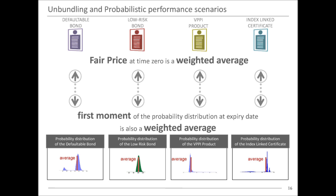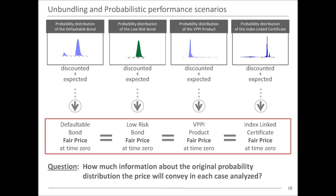You assign a proper probability to any possible trajectory, and using this information and the corresponding sigma-algebra, you compute the fair value. But if the fair value is a weighted average — the first moment of the probability distribution at the expiry date — the problem is: how much information is conveyed to retail investors just with the first moment of the probability distribution? That is the key point.